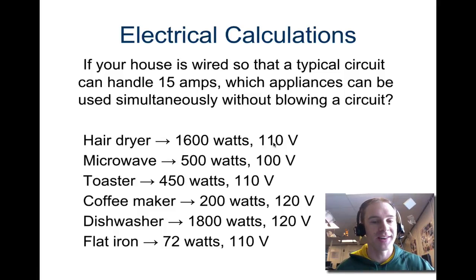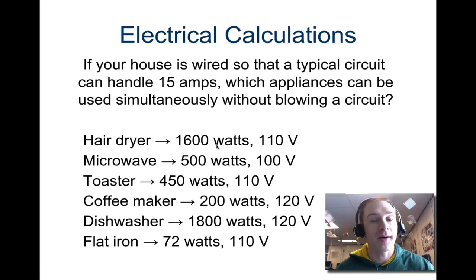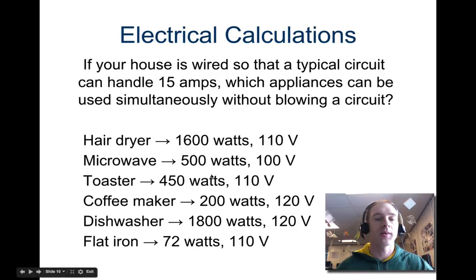Now that you've seen the magic triangle, you can solve for current really easy. Just cover up the I, and you find out it's power divided by voltage. So 1,600 divided by 110, and so on. Each one takes a certain amount of current. If all of them together take more than 15 amps, you can't run them all together.